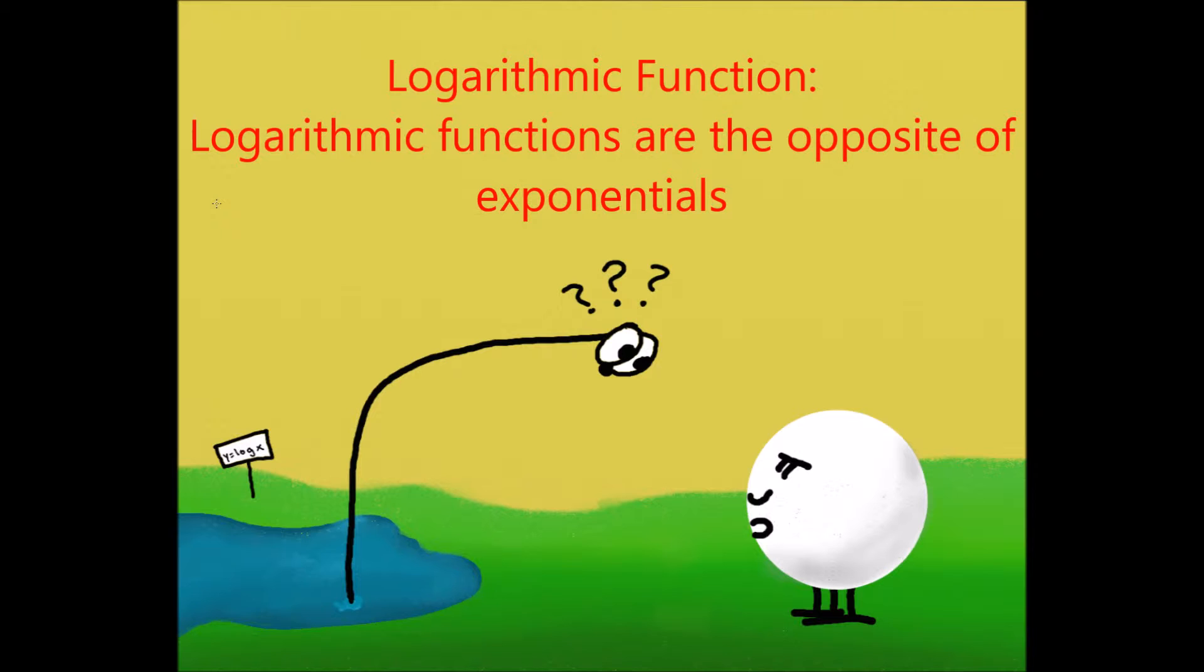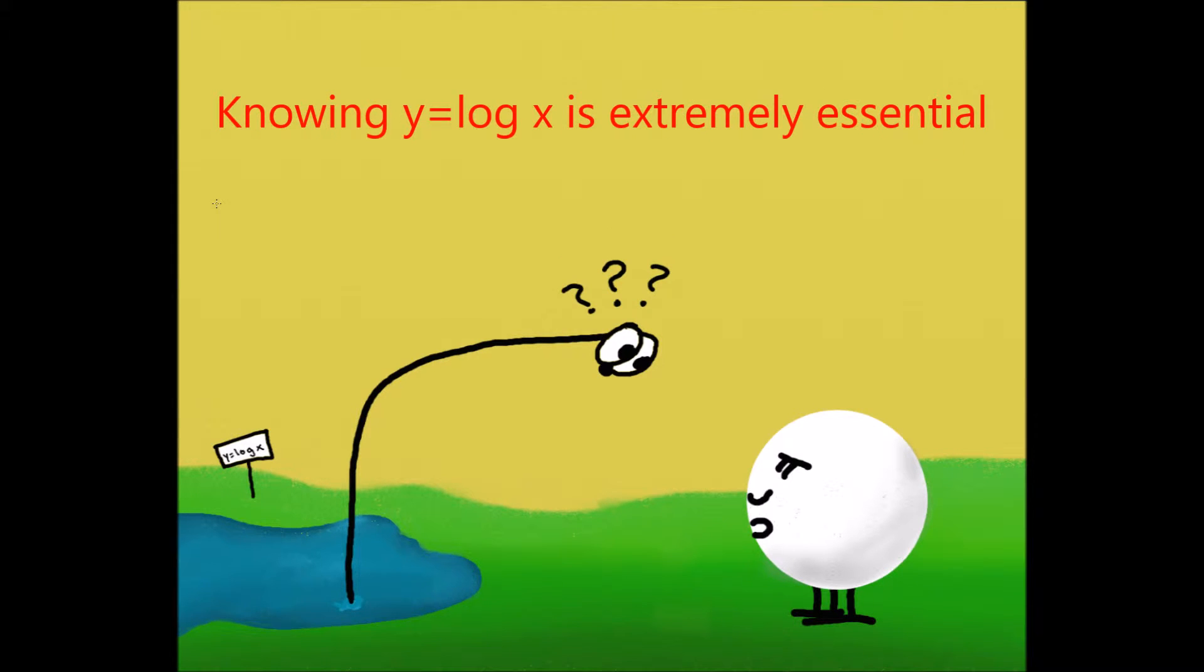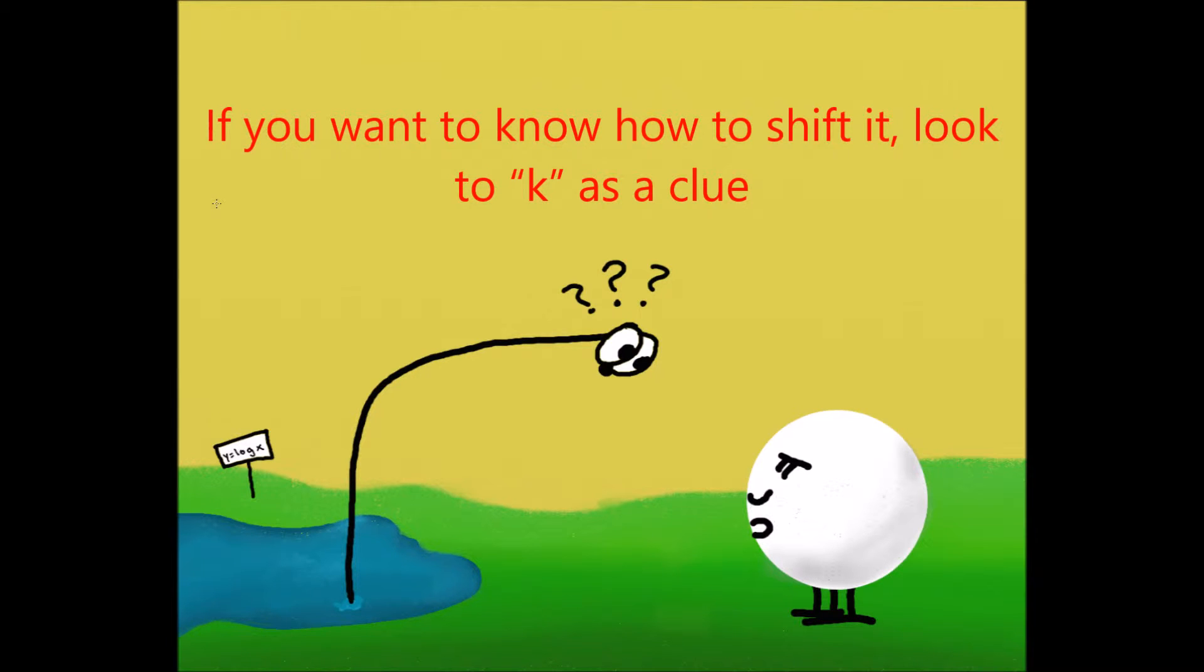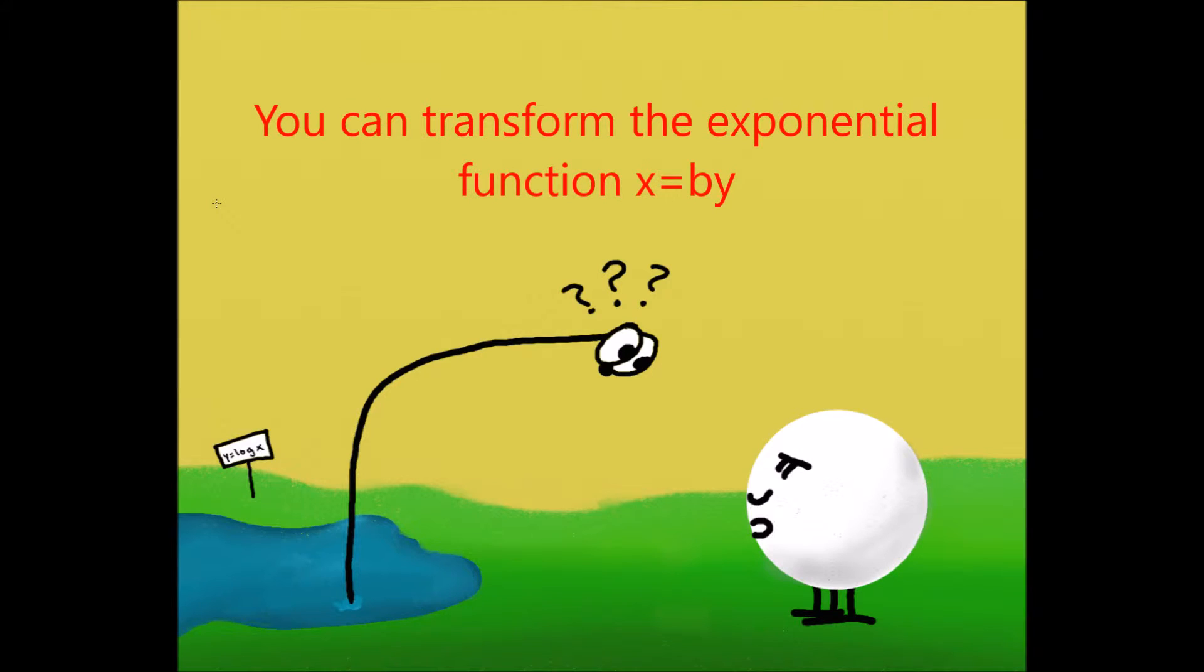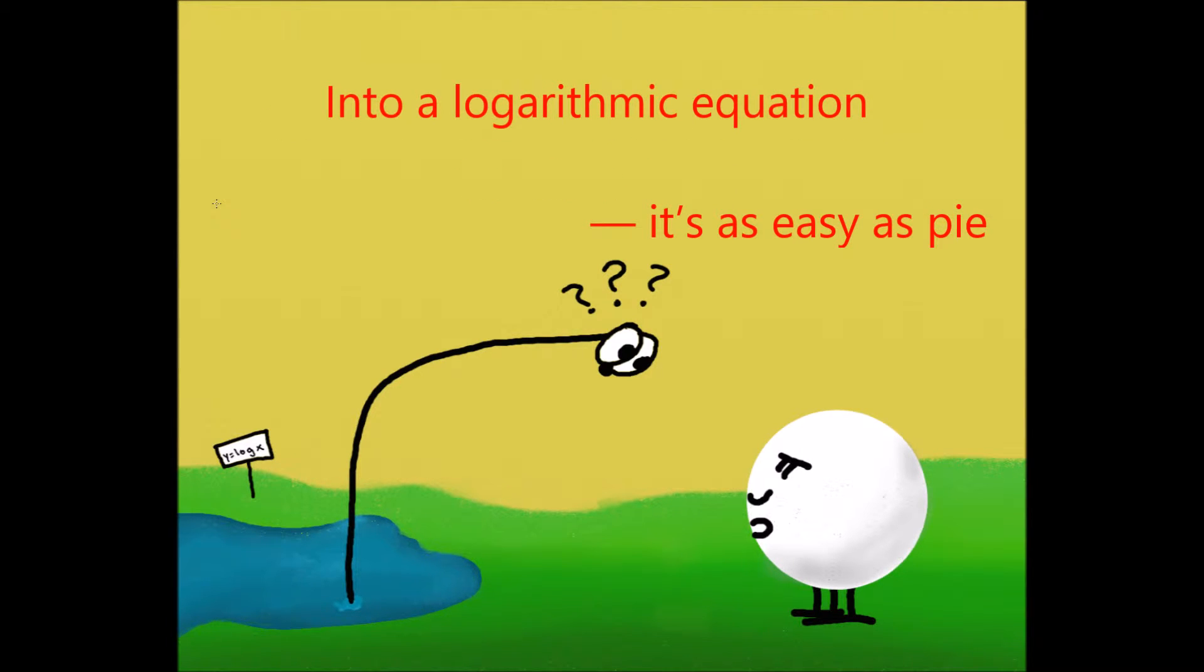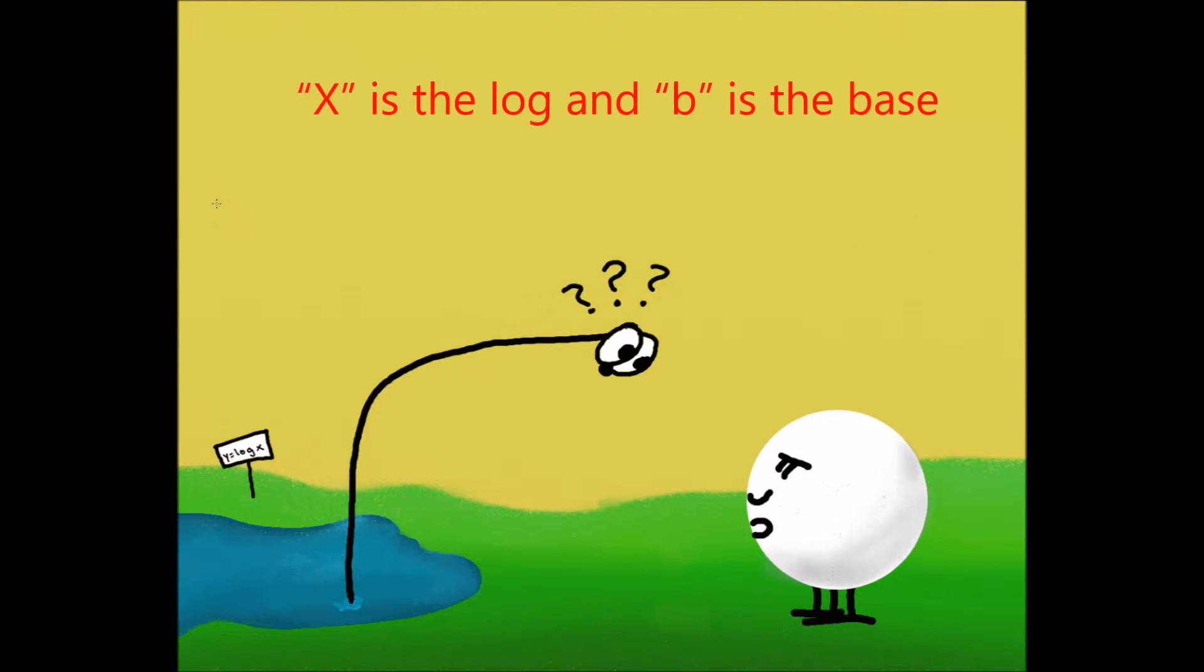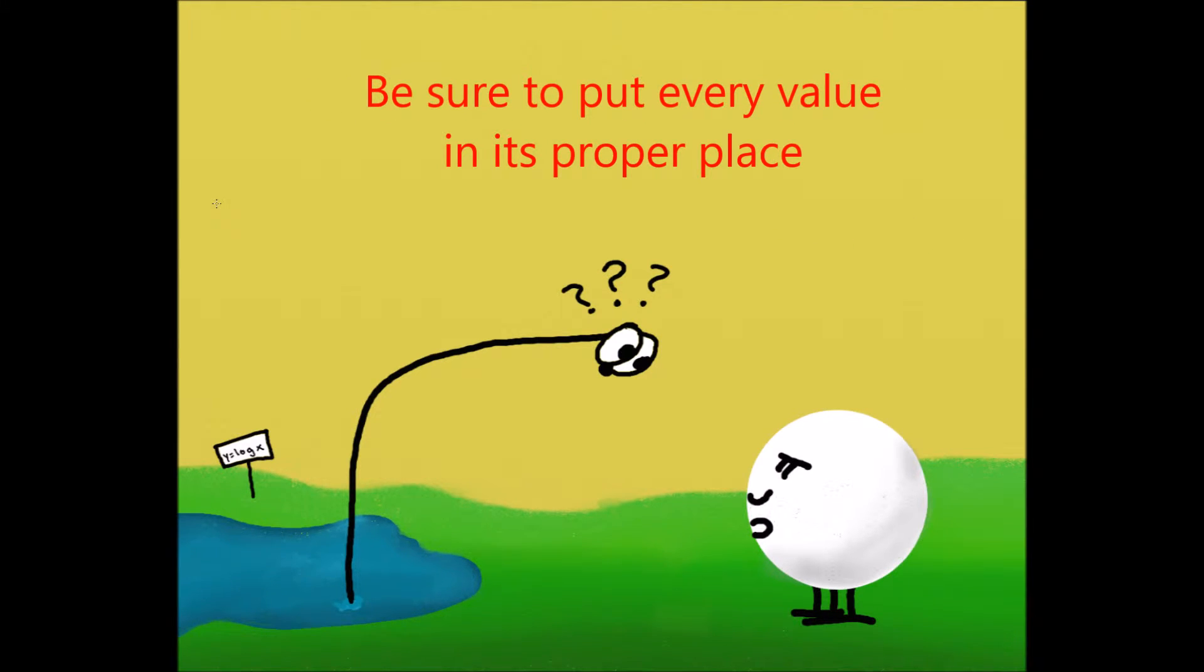Logarithmic functions are the opposite of exponentials. Knowing y equals log x is extremely essential. If you want to know how to shift it, look at the k as a clue. The vertical asymptote is equal to the h value. You can transform the exponential function x equals dy into a logarithmic equation. It's as easy as pi. x is the log and b is the base. Be sure to put every value in its proper place.